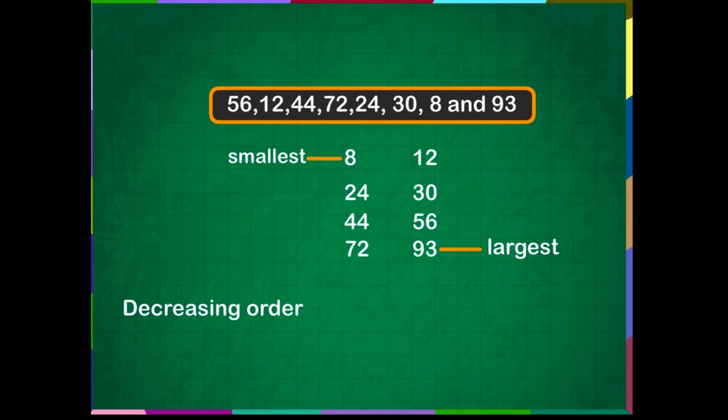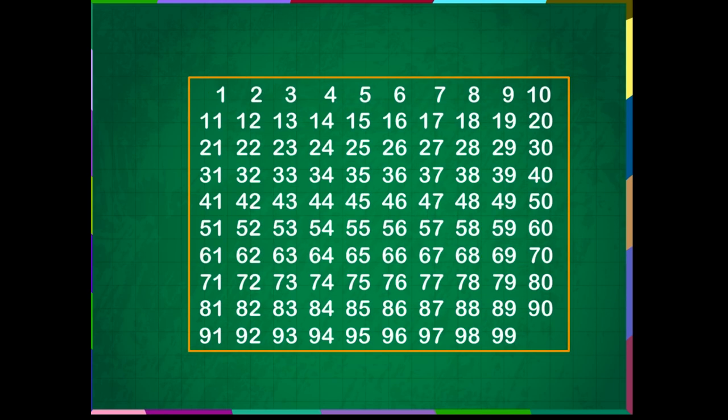Let us now arrange them in decreasing order: 93, 72, 56, 44, 30, 24, 12, 8. If we reverse count from 99 to 1, we are counting in decreasing order. We are counting from largest number to the smallest number.